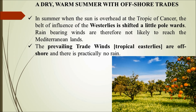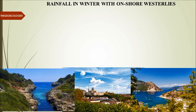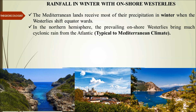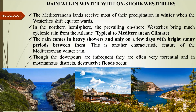Rainfall occurs in winter with onshore westerlies. Mediterranean lands receive most of their precipitation in winters when the westerlies shift back towards the equator. In the northern hemisphere, prevailing onshore westerlies bring much cyclonic rain from the Atlantic — typical of Mediterranean climate. Rain comes in heavy showers over only a few days with bright sunny periods in between. These downpours are infrequent and not always torrential, but they can lead to destructive floods, especially on slopes and in mountain districts.